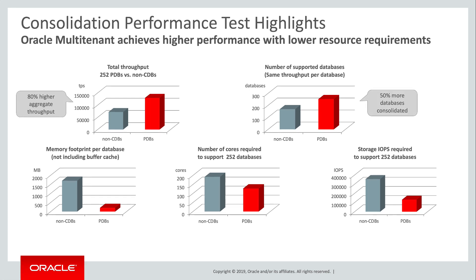For the second test, we established a baseline throughput per database with PDBs. This was repeated for non-CDBs. In each case, we added databases into the server until throughput per database began to degrade. With multitenant, we were able to consolidate 50% more databases before reaching this threshold.